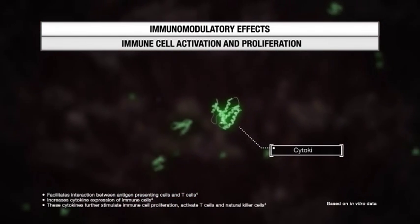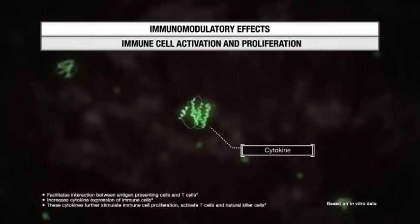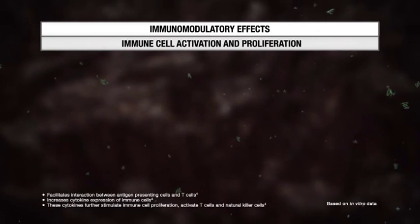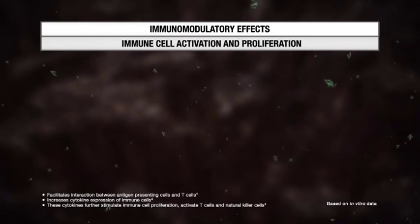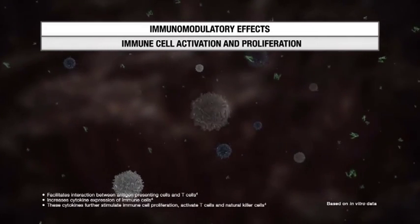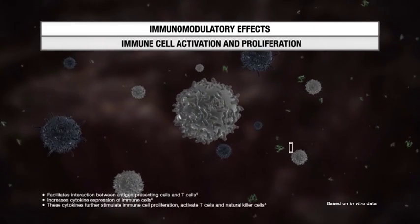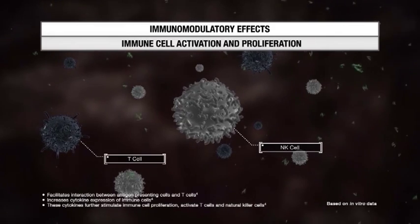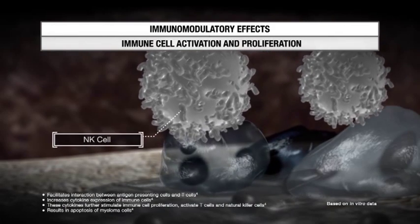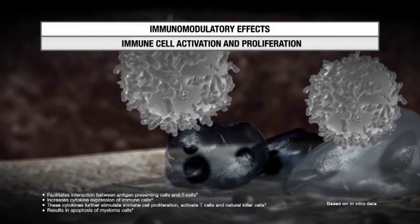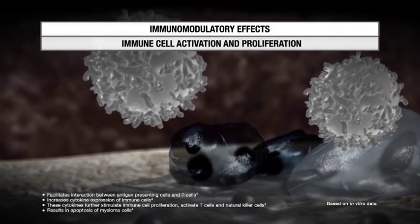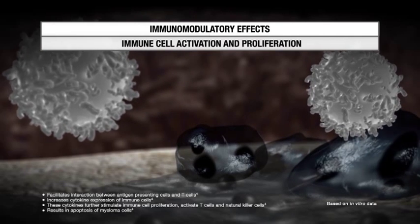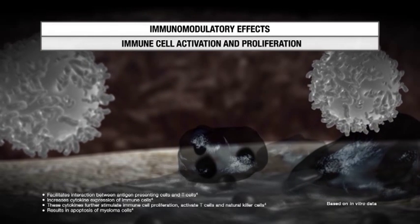These immune cells release cytokines, which further stimulate immune cell proliferation and activate T-cell and natural killer cell activity. This leads to increased activity against myeloma cells, causing them to undergo apoptosis.